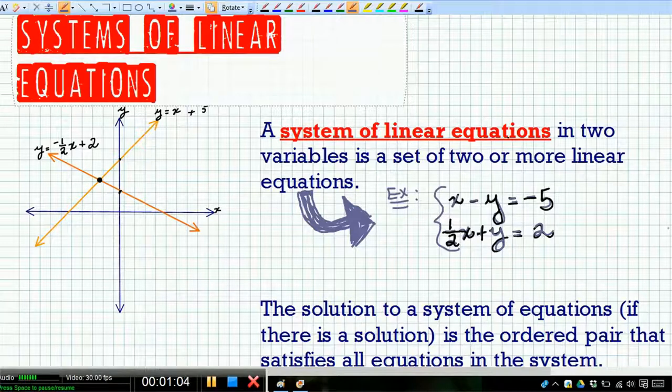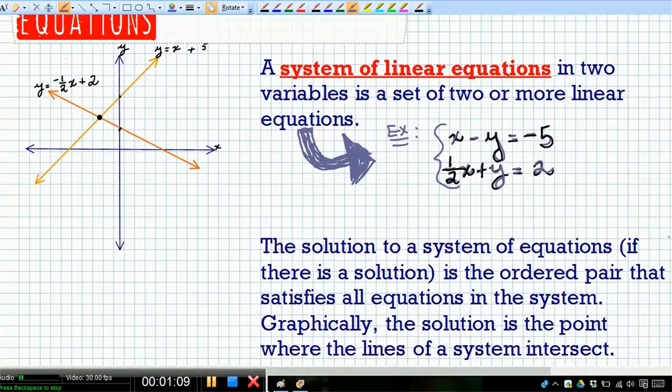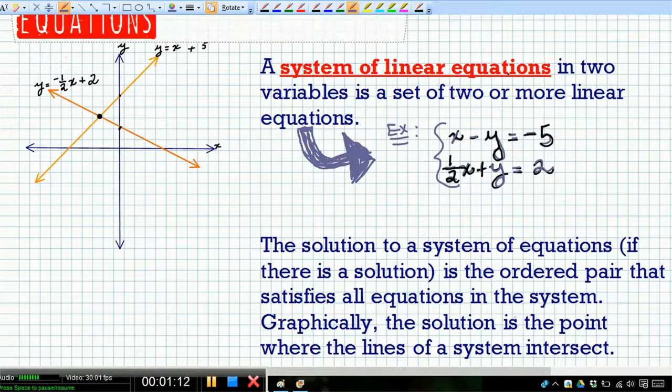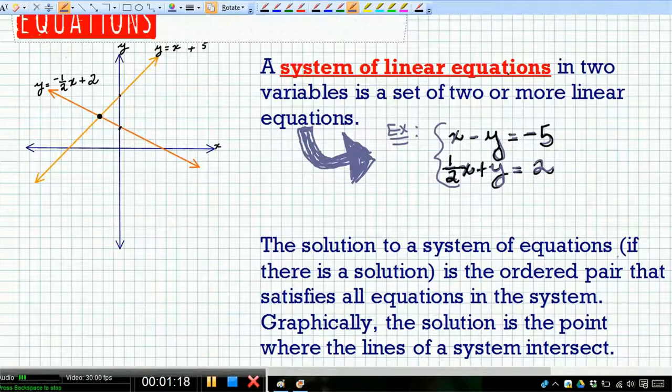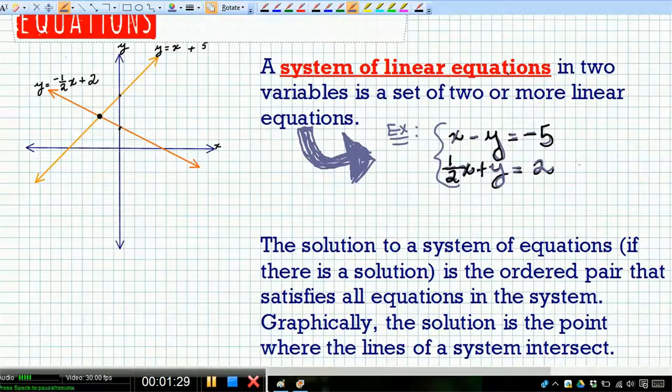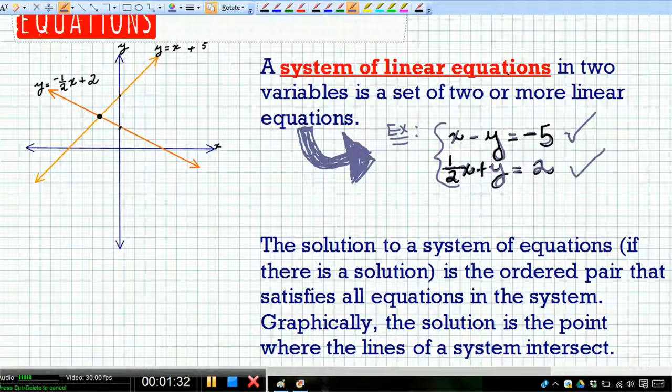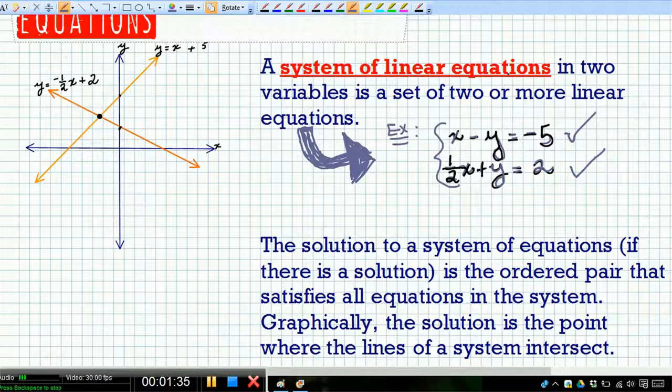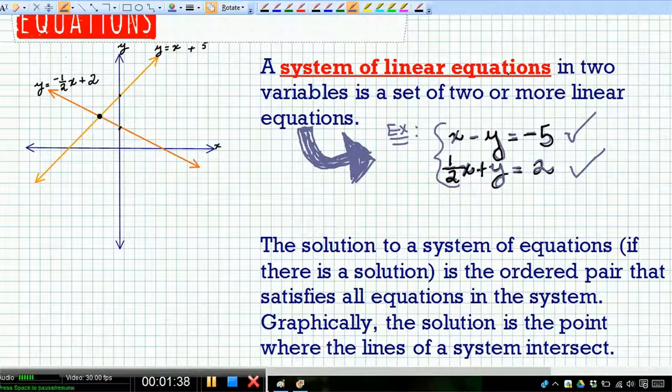The solution to a system of linear equations, if there is even a solution, is the ordered pair or the XY coordinates that satisfy all the equations in the system. It's got to satisfy not just one equation, so you plug your X and Y in hoping for a true statement, not just for one equation but for both. That's how you're going to check your solutions when you begin to solve these systems, and I'll give you some good examples of that in a bit.